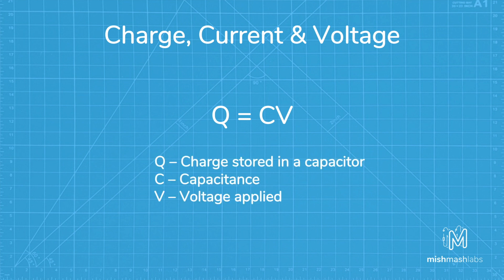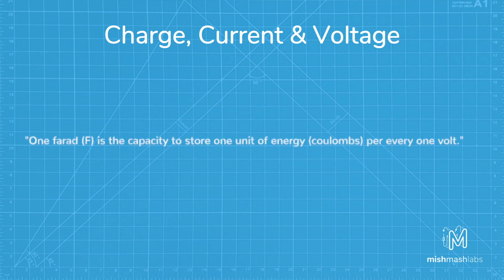where q, the charge stored in the capacitor, is the product of its capacitance and the voltage applied to it. This equation also gives us a good way to define the value of one farad. One farad is the capacity to store one unit of energy in coulombs for every one volt.